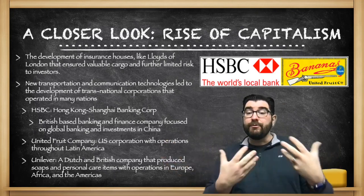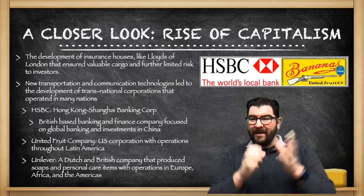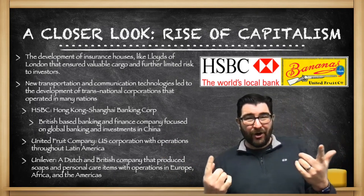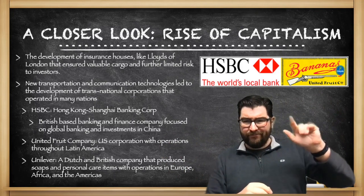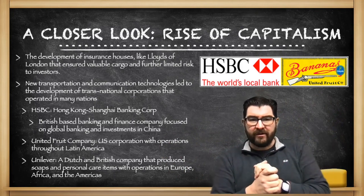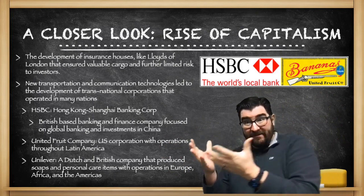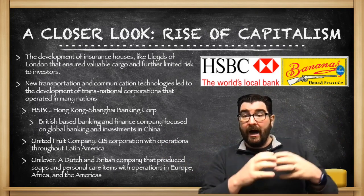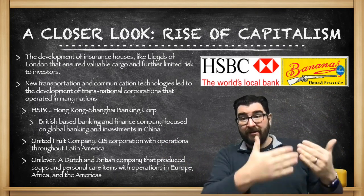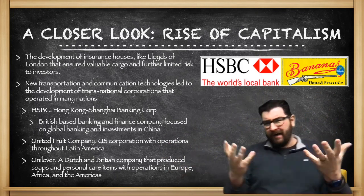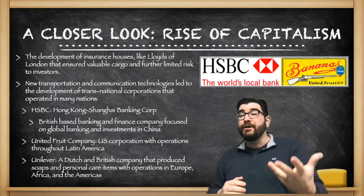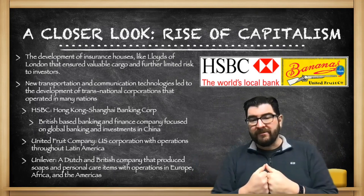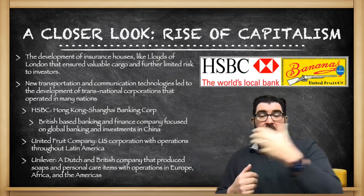In the Western Hemisphere, we have the United Fruit Company — the Chiquita banana people of today — an American company with operations throughout Latin America. This is also where we get the term 'banana republic': one of these Latin American governments that are strongly influenced by the United Fruit Company to shape government policies towards the needs and desires of this company, often seen as corrupt. And then the Unilever Corporation, a Dutch and British conglomerate that produces soaps and personal care items in places like Africa and Latin America.